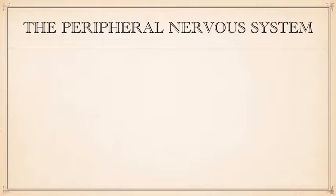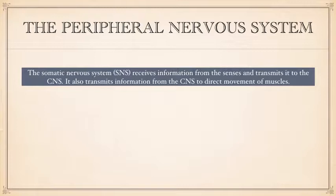The peripheral nervous system is the other part of the nervous system and that is made up of the autonomic and the somatic nervous system. The peripheral nervous system transmits messages via neurons to and from the central nervous system. It is further divided into the somatic nervous system, which receives information from the senses and then transmits that information to the central nervous system. It's also responsible for muscle movement as well.